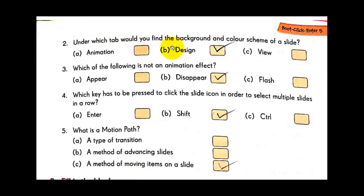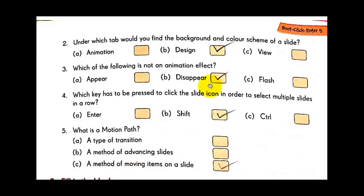Question two: Under which tab would you find the background and color scheme of a slide? Options: Animation, Design, or View. The answer is B — Design. Question three: Which of the following is not an animation effect? Appear — yes, it is an animation effect. Flash — yes, also an animation effect. Disappear — this is not an animation effect. So the answer is B — Disappear.